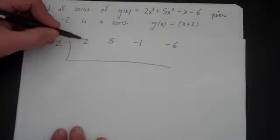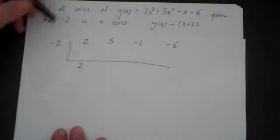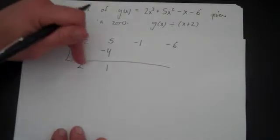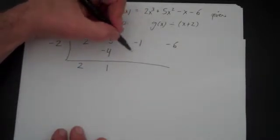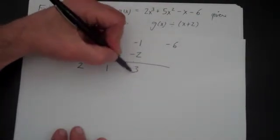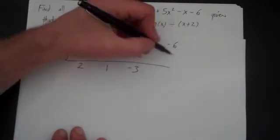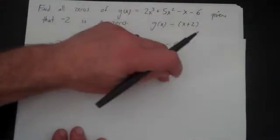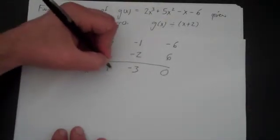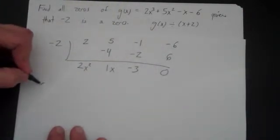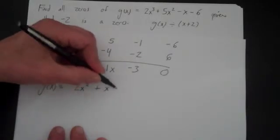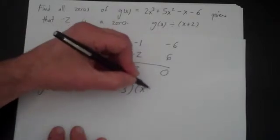Bring a 2 down. Minus 2 times 2 is minus 4, then I add — I get 1. Minus 2 times 1 is minus 2, that's minus 3. Minus 2 times minus 3 is positive 6. Minus 6 plus 6 is 0, so that's your remainder. This is your x squared term, this is your x term, and that's your constant. So g(x) can be written as (2x² + x - 3)(x + 2).